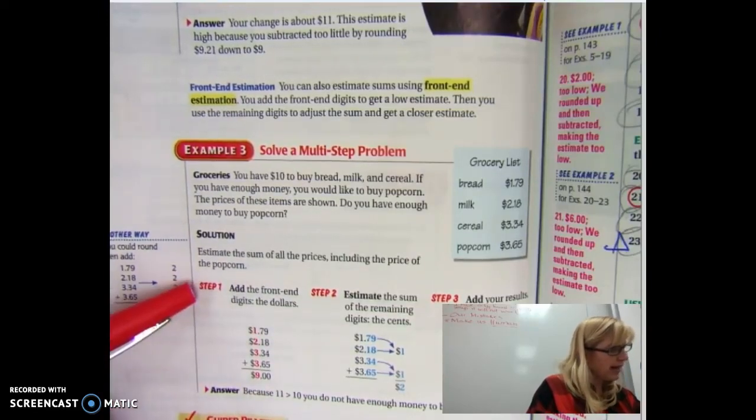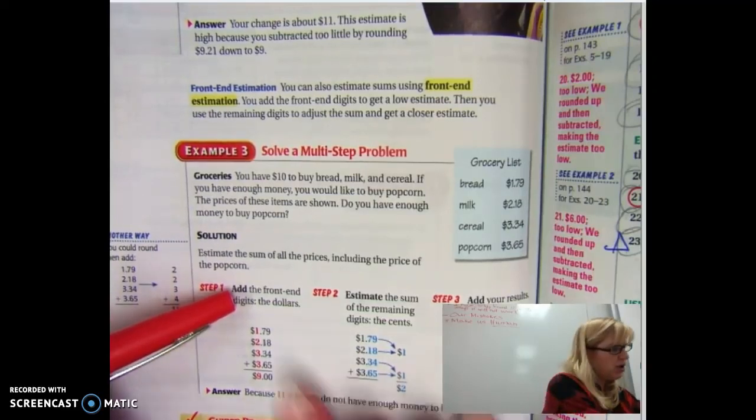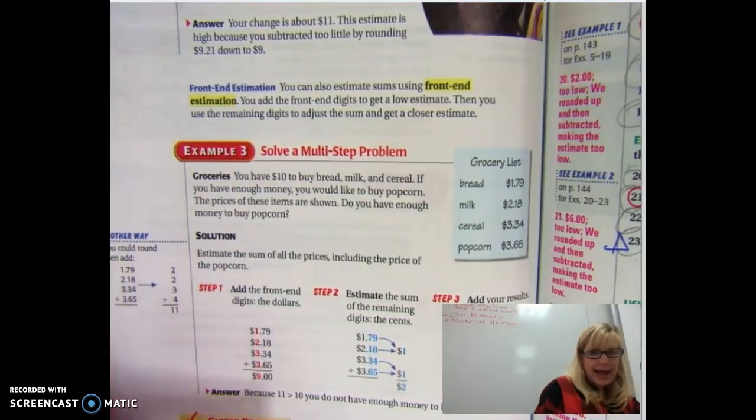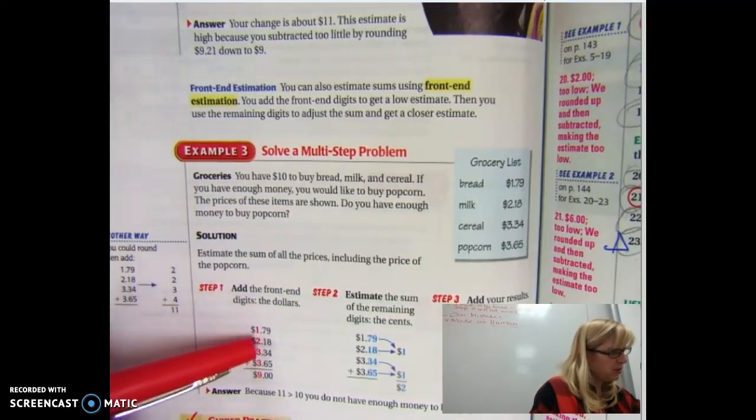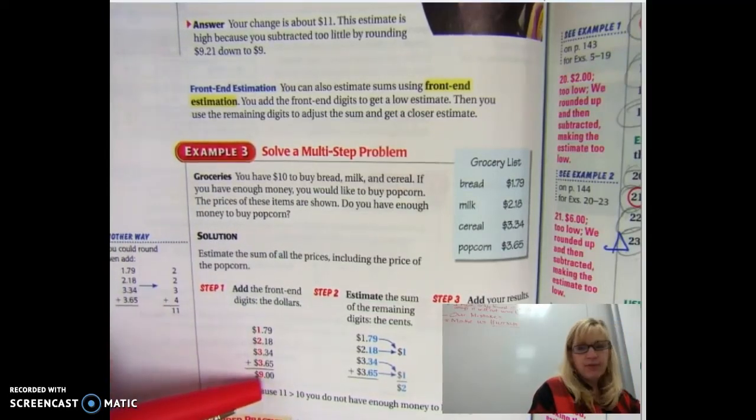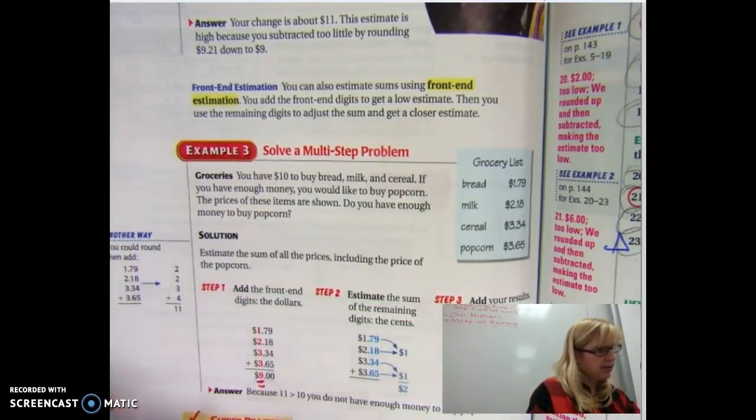So if you're doing this, step one, and if you would write in your notes, step one is add the front end digit. So you don't even pay attention to the last two. So if you look one plus two plus three plus three is nine. So you get this $9 to start with.